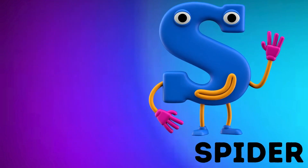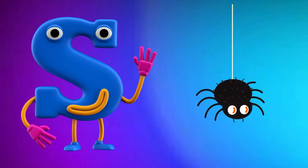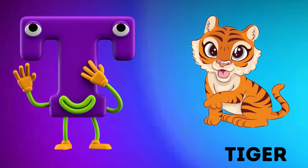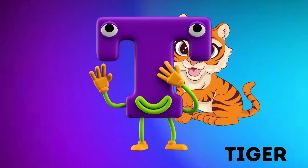P is for Pony. S is for Spider. T is for Tiger.